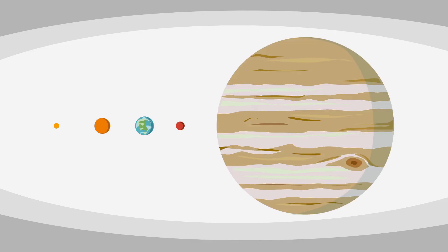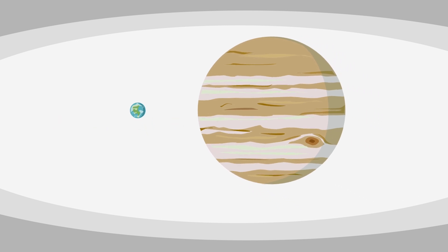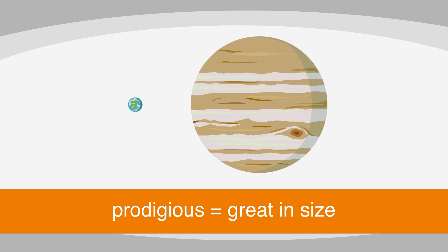For instance, we can compare the size of the planets to one another. Wow, just look at Jupiter compared to Earth. That planet is prodigious, or impressively great in size. Yep, another bonafide ACT word to stick in your back pocket.